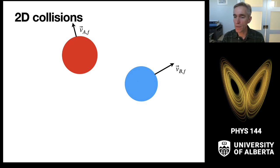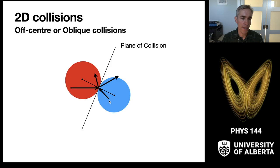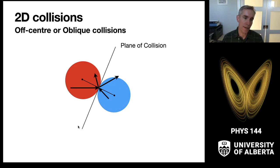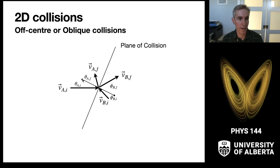We want to go back to the moment of collision. When these objects are colliding, I've returned the velocity vectors to the actual moment of collision. I've drawn in the initial and final velocity vectors for A and the initial and final velocity vectors for B. You'll notice that when they touch, there is always going to be a plane of collision, and that plane of collision is the key point around which we analyze our physics problem.